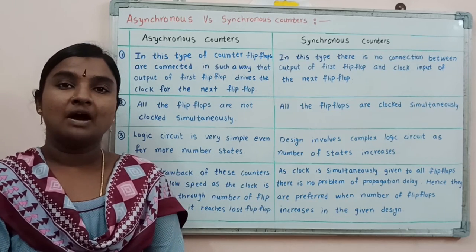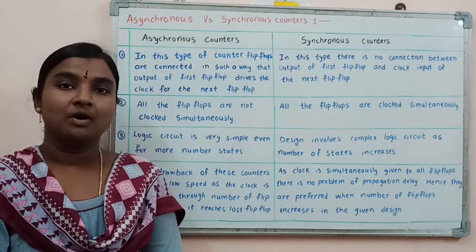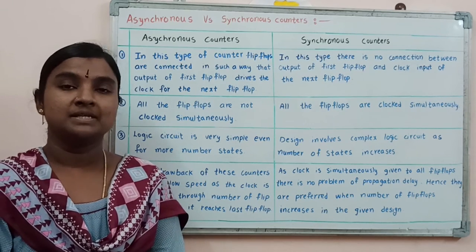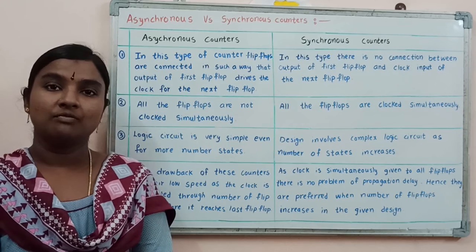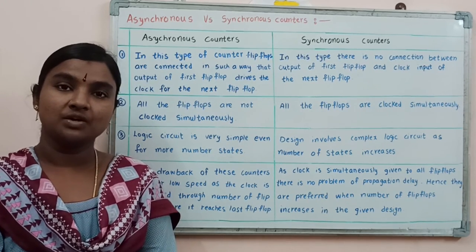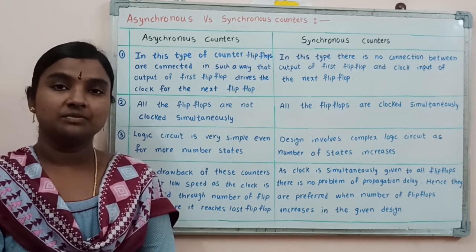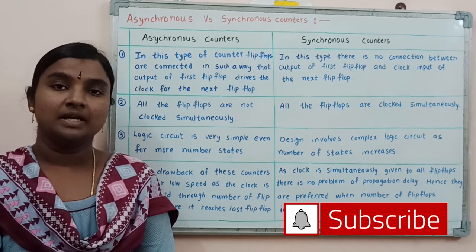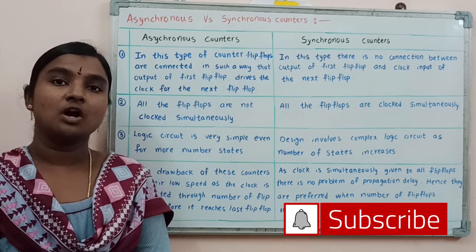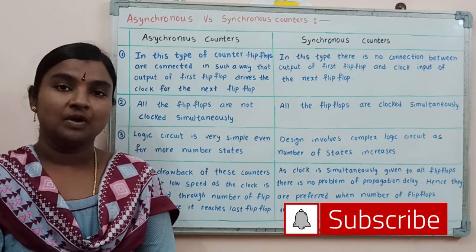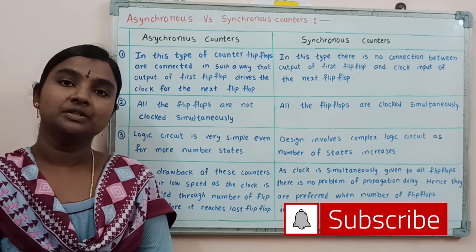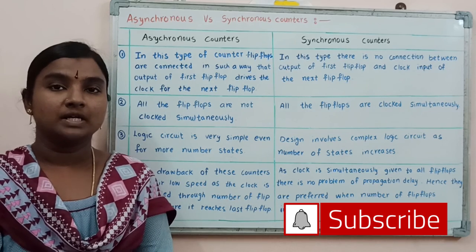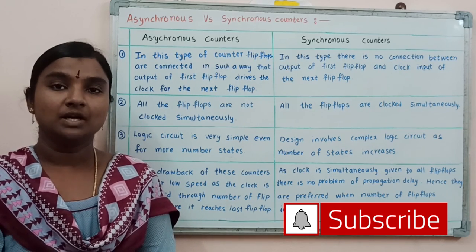An important point to note about both Synchronous and Asynchronous Counters: the number of binary bits will decide the number of flip-flops we are going to use. In Asynchronous Counters, the first flip-flop is triggered by the clock pulse, and the second, third, and all successive flip-flops are clocked by the previous flip-flop outputs. In Synchronous Counters, all the flip-flops are clocked simultaneously by the clock pulse.